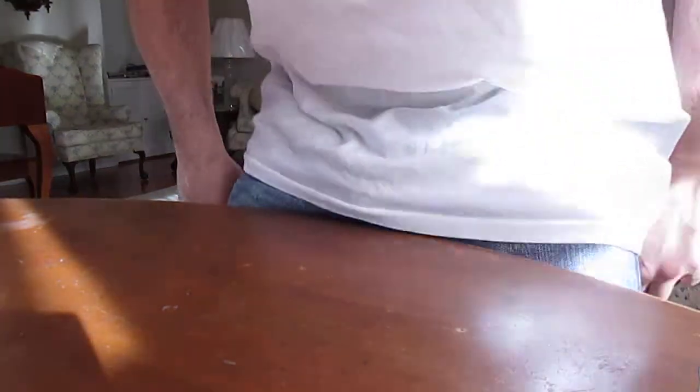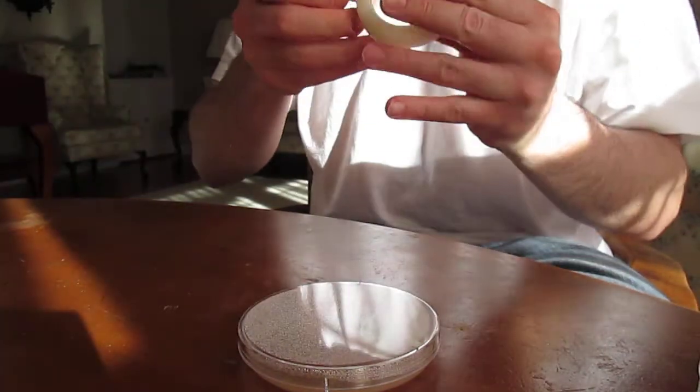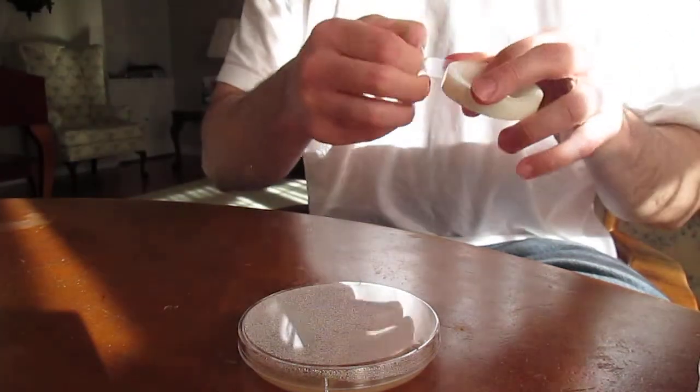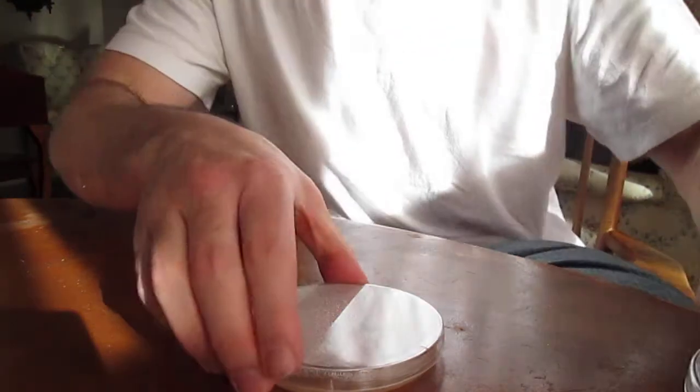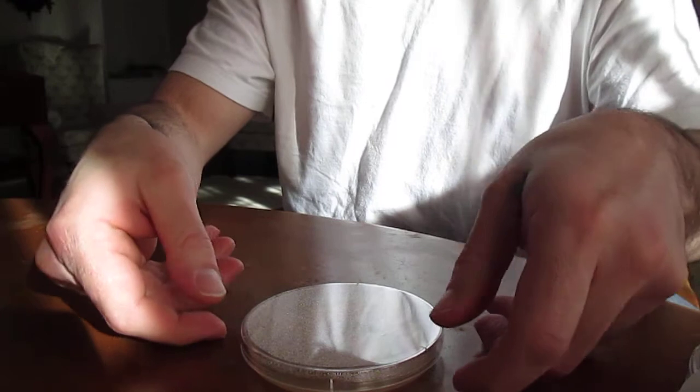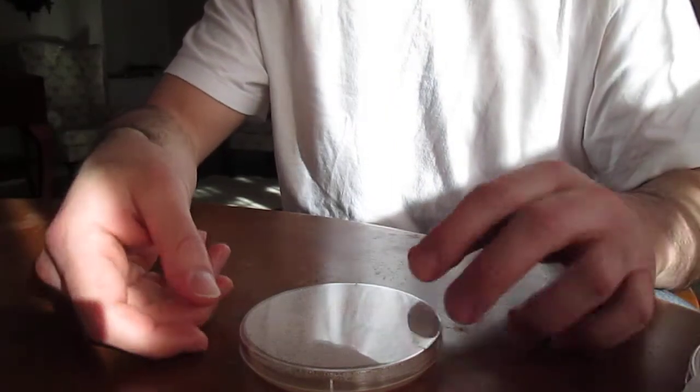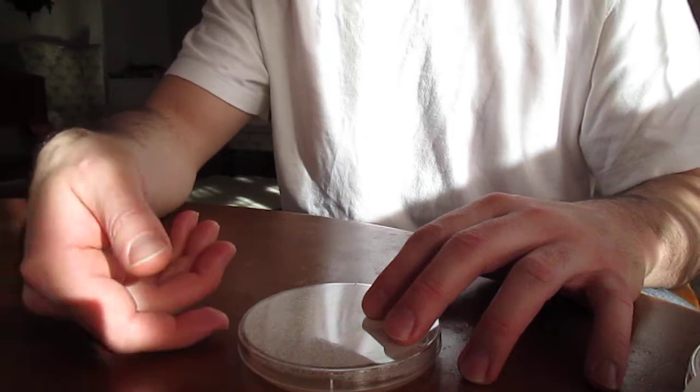Finally, what we're going to do here is apply parafilm around the edges of these petri dishes that are filled with nutrient agar. This is to keep out any kind of contaminants. When you put them in the refrigerator or as they're laying around, anything can just crawl in.